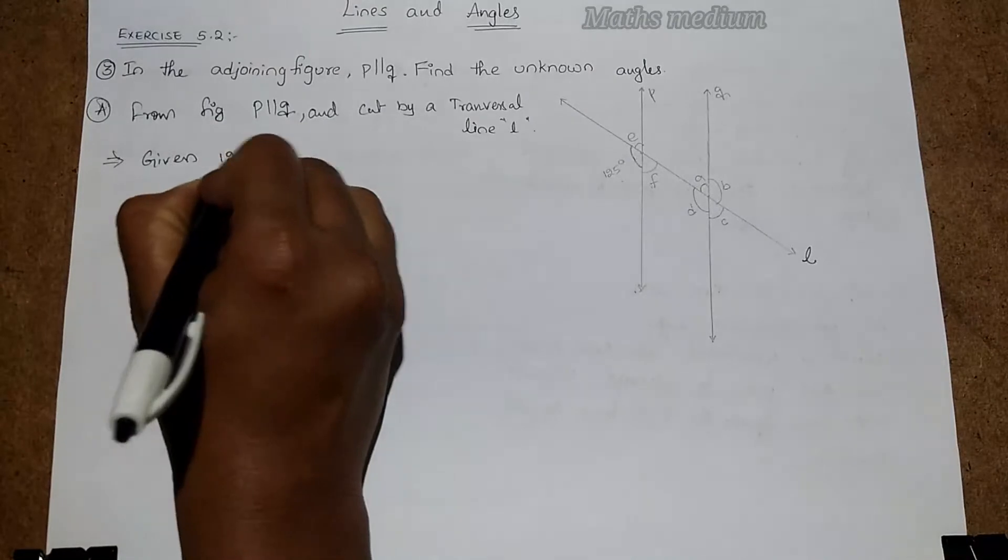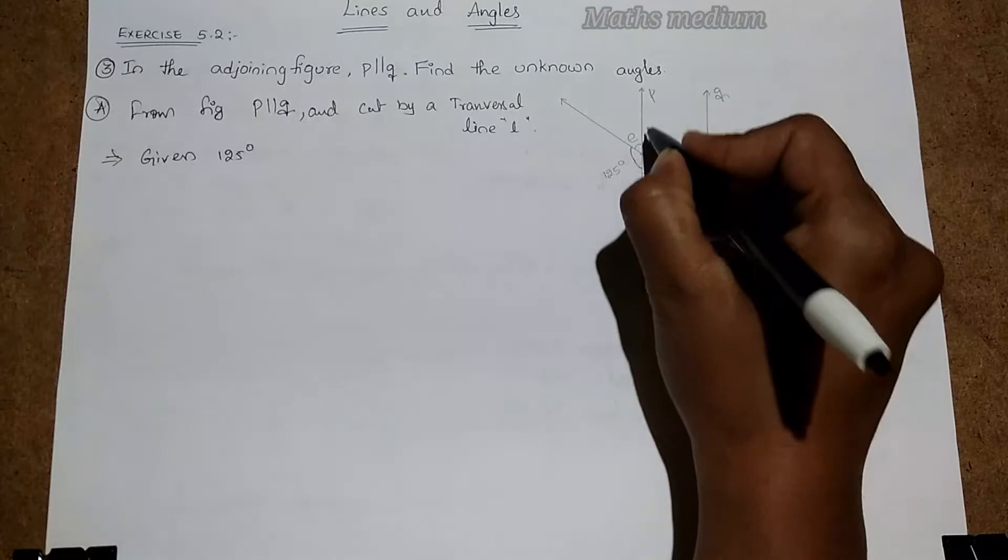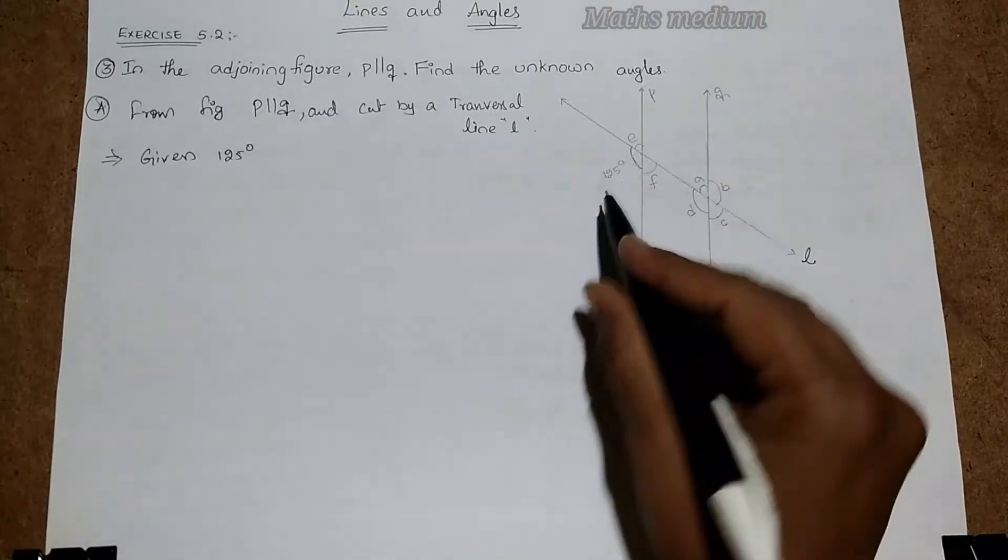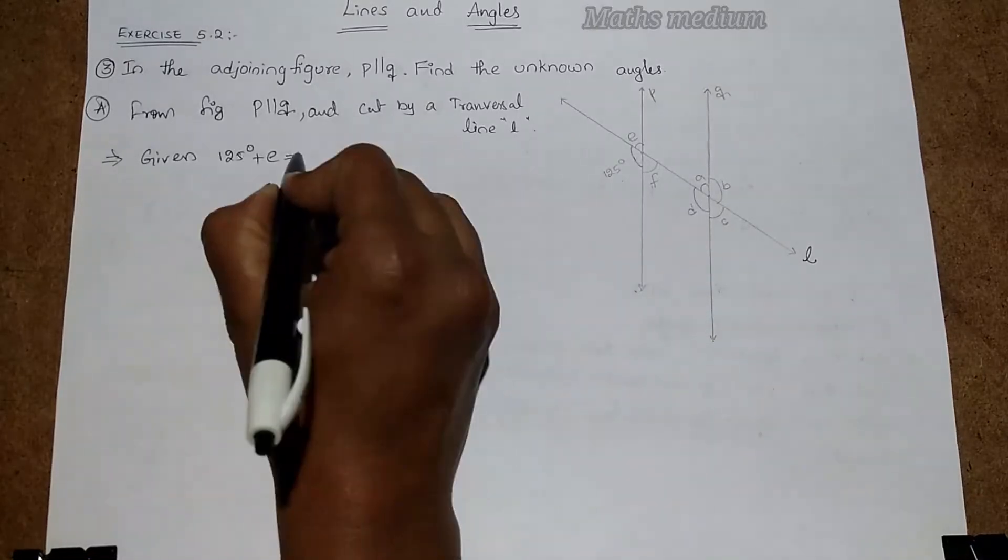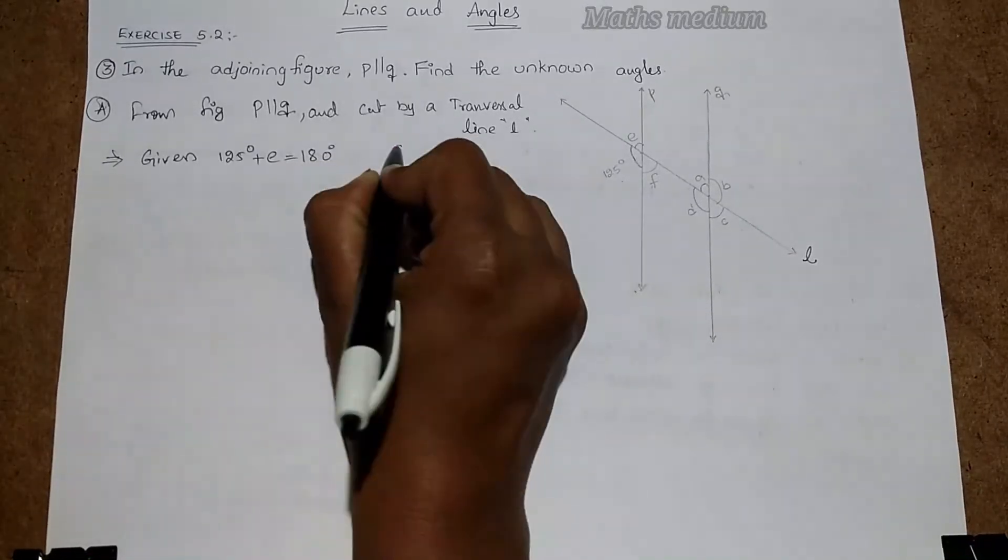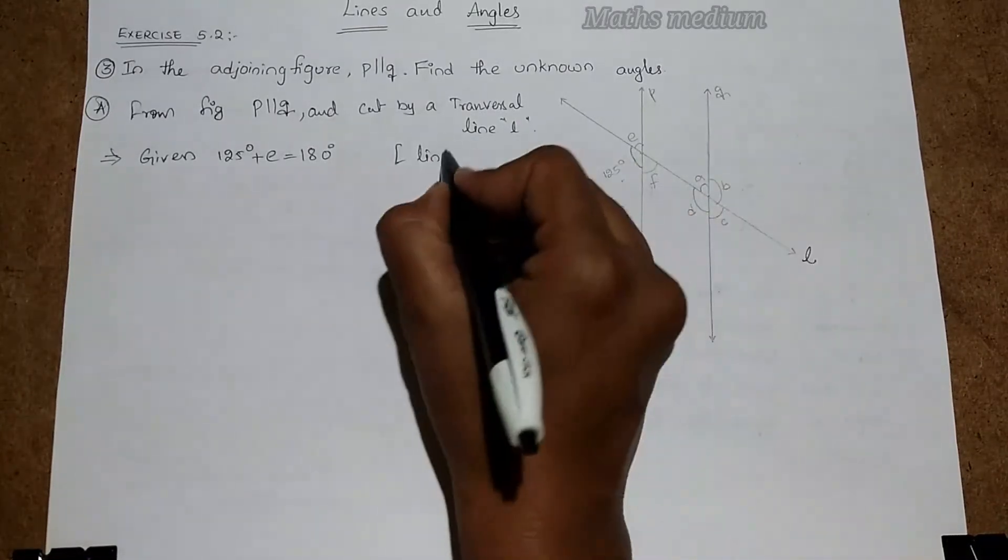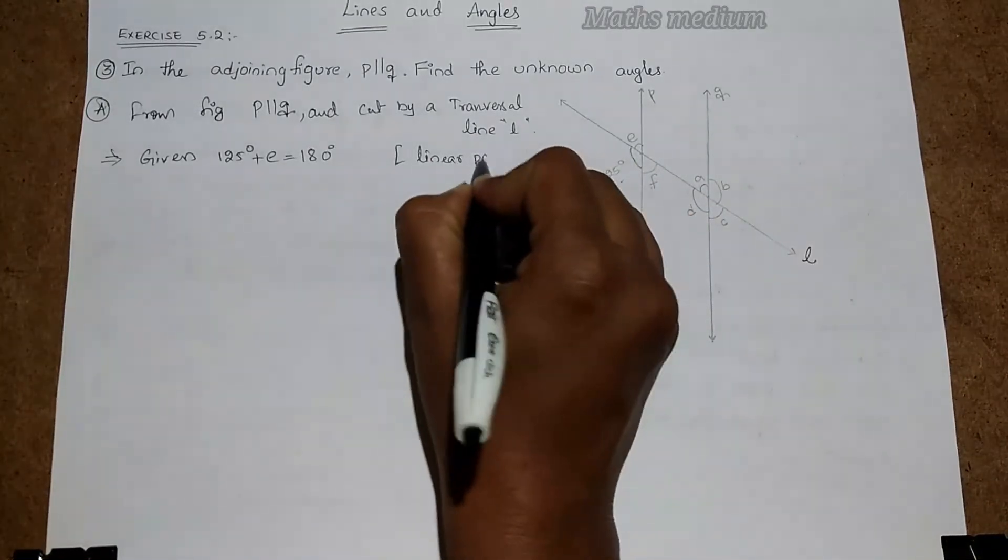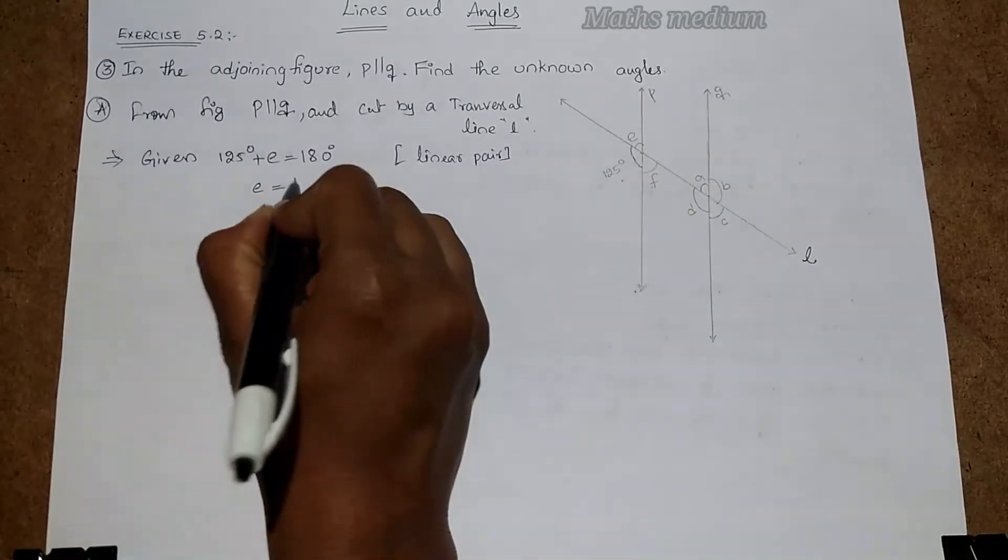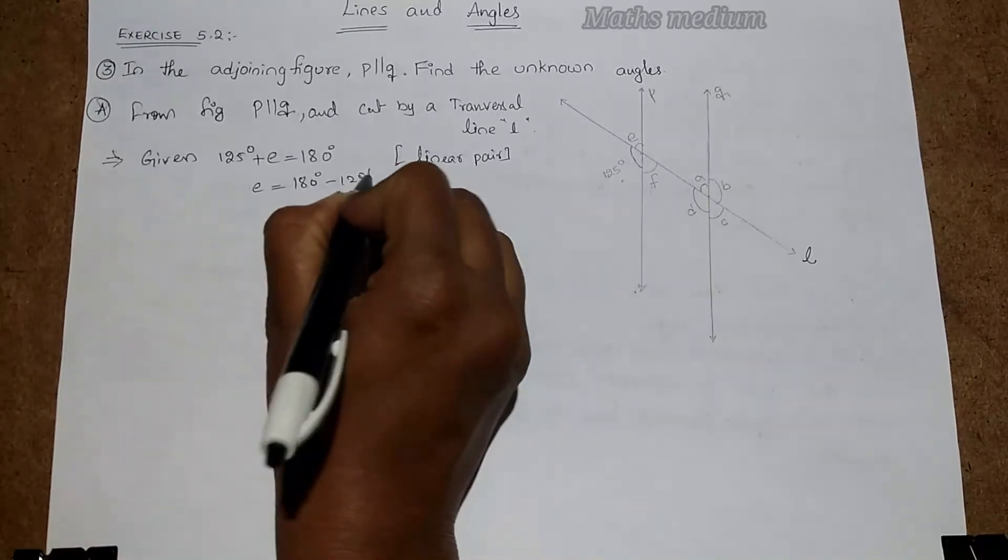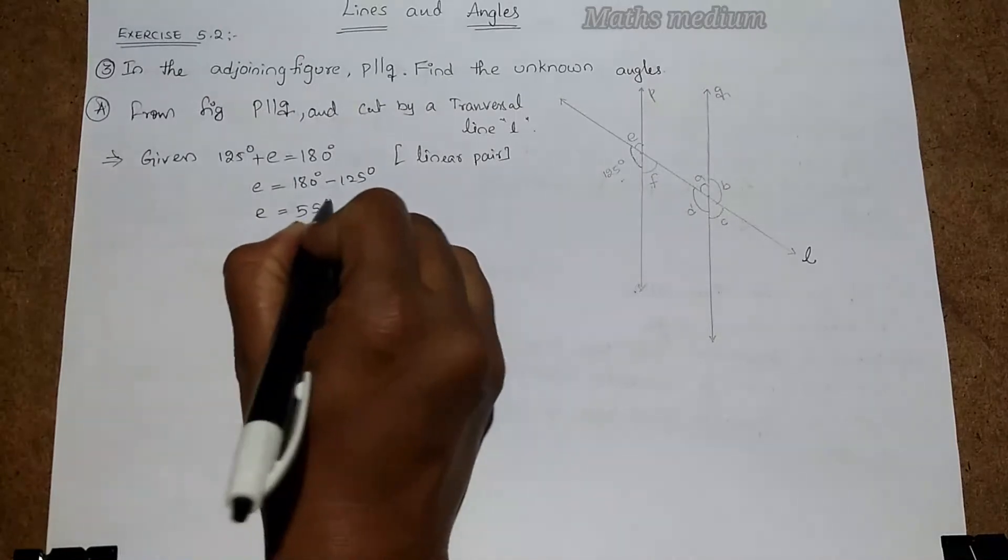Here given 125 degrees at one point. Take this line first of all, line P. 125 plus E equals 180 degrees. How? Because of linear pair. In a linear pair at a point we have 180 degrees, right? So linear pair property. From this, we can say 180 degrees minus 125 degrees, so E is equal to 55 degrees.